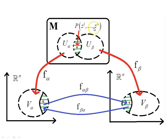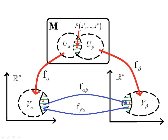Pick point P in the Z coordinate system and map it to Euclidean space with F_alpha to get one point, or with F_beta to get another point. Then we have this coordinate transformation — or coordinate change — from V_alpha to V_beta or back the other way. Having mapped from the Z coordinate system to V_alpha, we call the coordinates describing point P in V_alpha the X coordinate system, and in V_beta the Y coordinate system. The coordinates of point P are mapped from chart F_alpha to chart F_beta according to F_alpha_beta, mapping the point in the X coordinate system to the Y coordinate system. The inverse is F_beta_alpha.